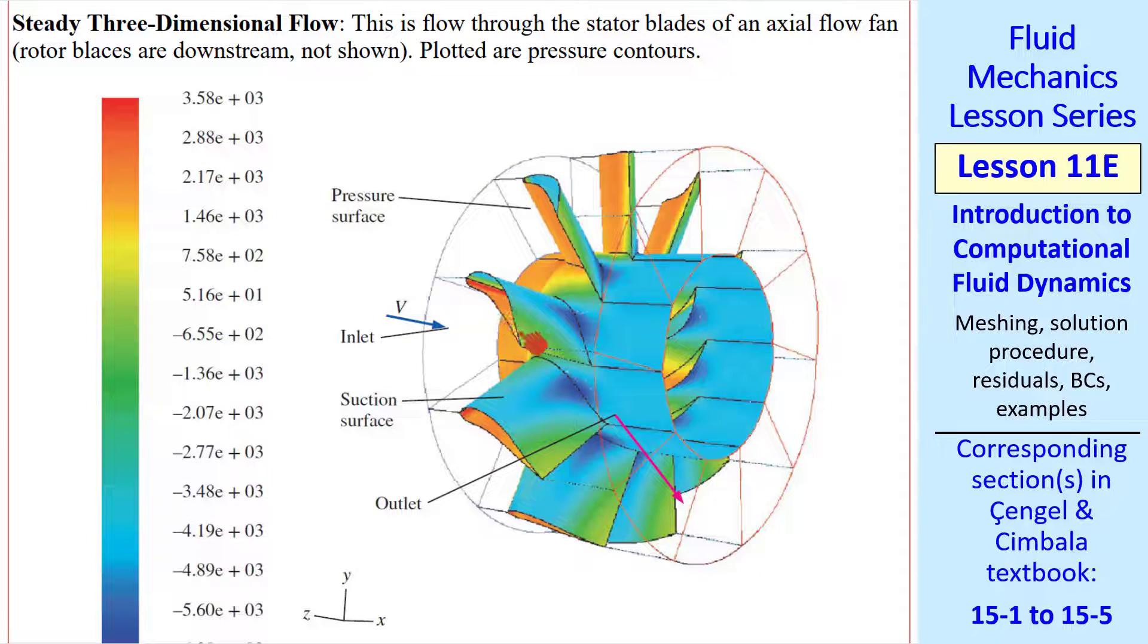If we do this same problem in three dimensions, we can get pressure contours on the blades and the hub of this stator. The rotor blades would be downstream of these stator blades for this axial flow fan with the flow from left to right. You can see that the pressure on the underside of the blade is large using this scale. And on the top surface, it's small. In turbomachinery, we call this pressure surface and the suction surface. Overall pressure along the hub is decreasing in the flow direction.